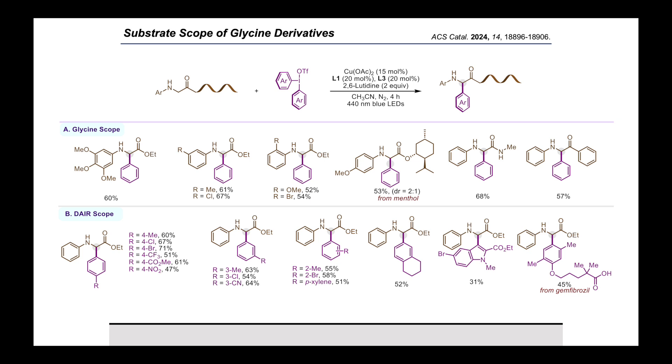Then we explored the scope of diaryl iodonium reagent, where various electronically diverse, electron-rich and electron-deficient, ortho-meta-para-substituted diaryl iodonium reagents underwent smooth transformation, giving their corresponding products in moderate to good yields. Importantly, heteroaryls like indole and bioactive molecule like gemfibrozil containing diaryl iodonium reagents participated in the reaction medium.